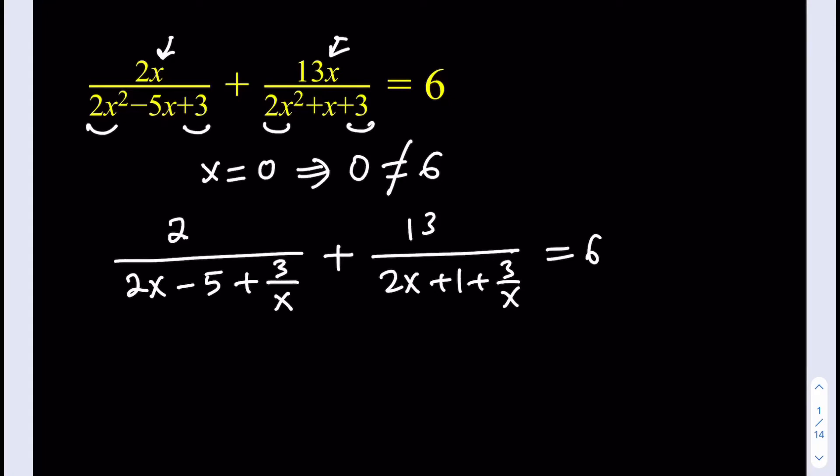Now, the good thing about this is that, and the reason why we do this is because now we get a really nice expression. We do get the 2x plus 3 over x twice, so I can go ahead and use that as my substitution. So what I'm going to do now is I'm going to replace 2x plus 3 over x with another variable like u. As you know, I like u substitution. And it doesn't have to be an integral to use the u substitution. It can be an algebra problem. So we're going to use u substitution. If you do that, we're going to be getting 2 over u minus 5 plus 13 over u plus 1, and that's going to equal 6, which is nice because, obviously, this is a much simpler equation.